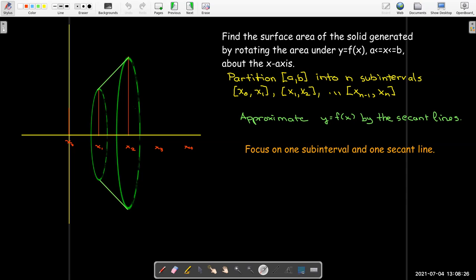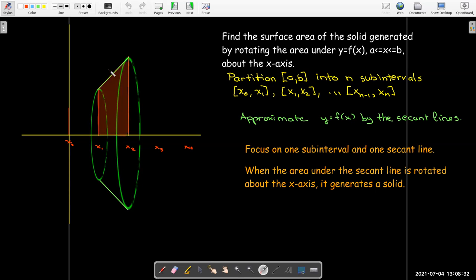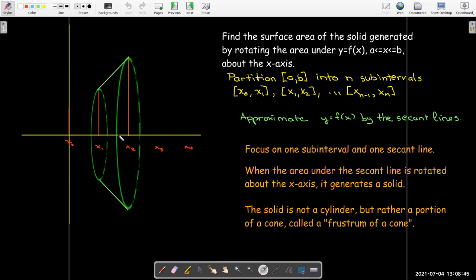So let's just look at one of these slices. If I generate this solid by taking this region under the secant line and rotating about the x-axis, it's not a cylinder, but it's actually a portion of a cone. You can think of it as the base of a cone - it's called the frustum of a cone. You have this larger cone and you chop off the top and what's left over is called the frustum.